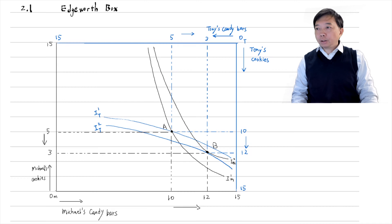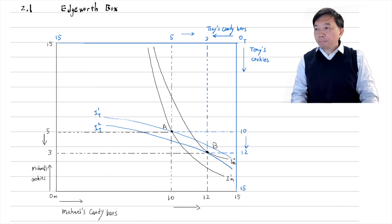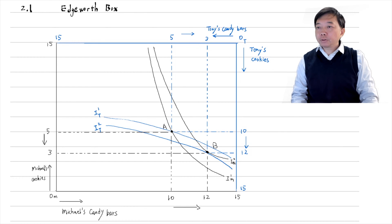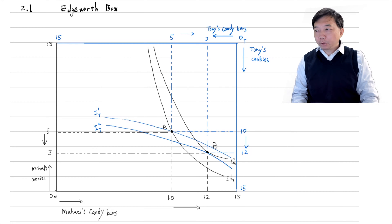The initial allocation is the endowment point A, where Michael has 10 candy bars and 5 cookies, and Tony has 5 candy bars and 10 cookies. Michael's indifference curve IM1 goes through his endowment A. Tony's indifference curve IT1 also goes through the endowment A. The two indifference curves intersect, and their marginal rates of substitution are unequal. Mutually beneficial trades between Michael and Tony are possible at endowment A.